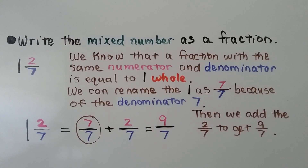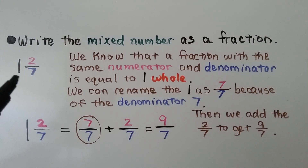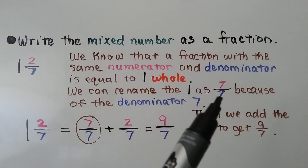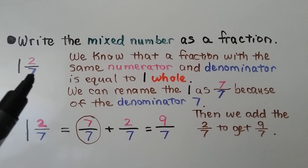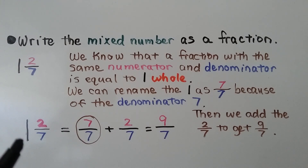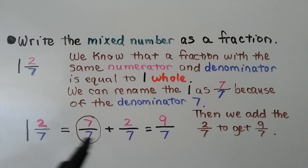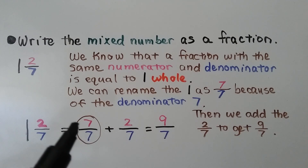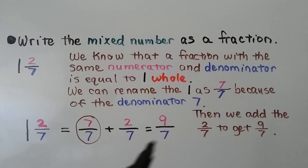Now we write the mixed number one and two sevenths as a fraction. We know that a fraction with the same numerator and denominator equals one whole, so we rename the one as seven sevenths because the denominator is seven. One and two sevenths equals seven sevenths plus two sevenths. Since they have like denominators, we add the numerators to get nine sevenths.